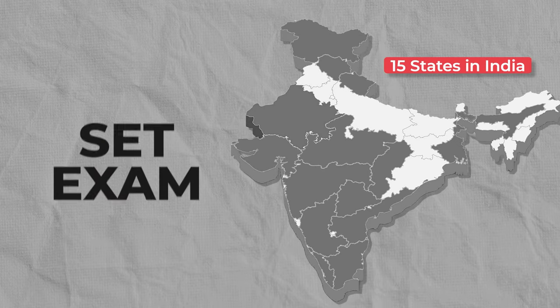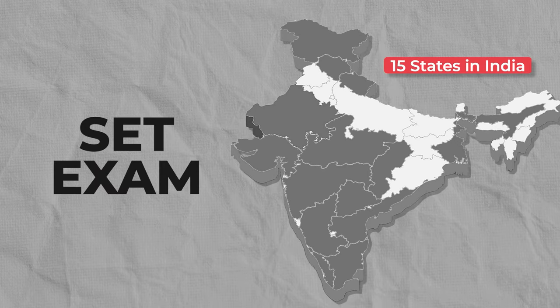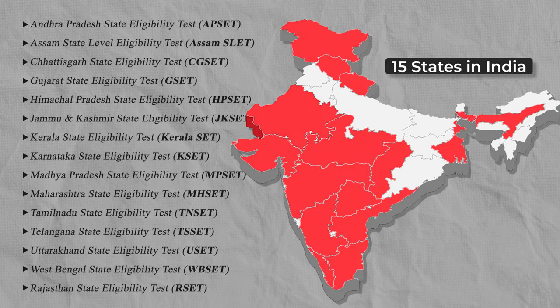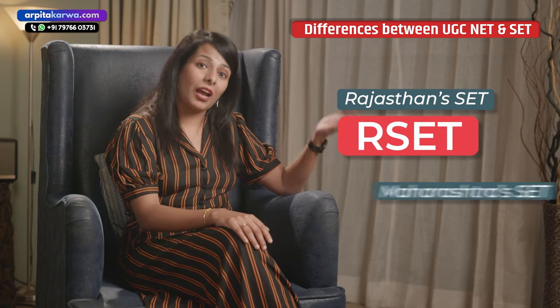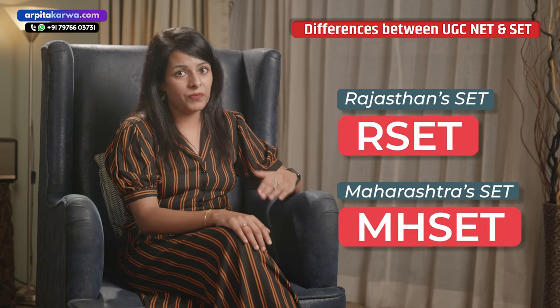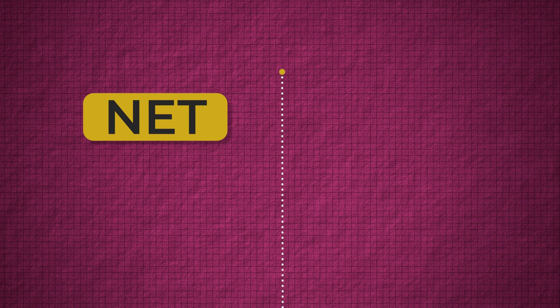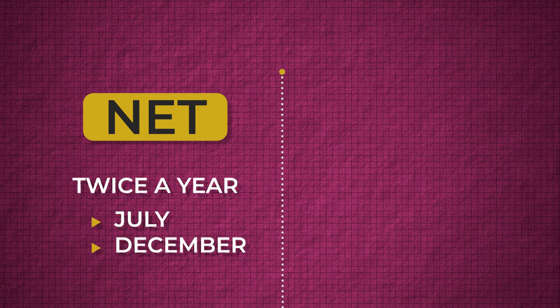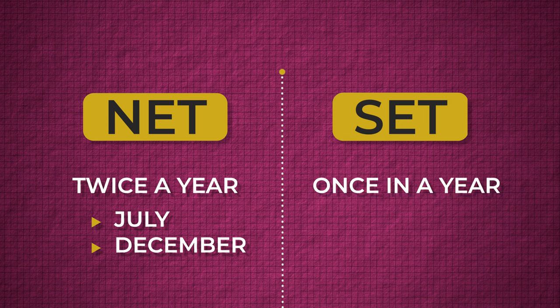Currently, there are 15 states in India that conduct their own SET exams, including Andhra Pradesh, Assam, Jammu & Kashmir, Kerala, Maharashtra, and a few others. Every SET exam is denoted by the name of the state — for example, Rajasthan's SET is known as R-SET, whereas Maharashtra's SET is known as MH-SET. Another difference is the frequency: the NET exam is ideally conducted twice a year, in July and December, whereas the SET exam is conducted just once a year.